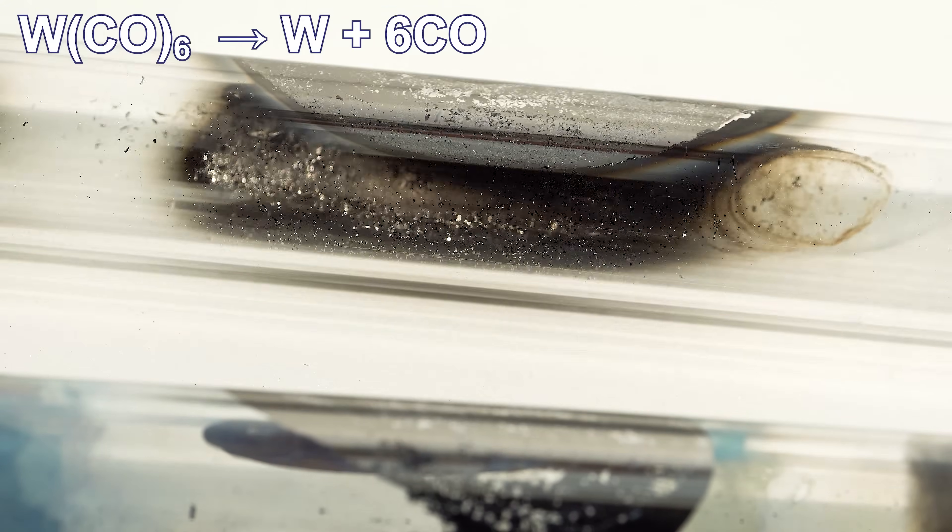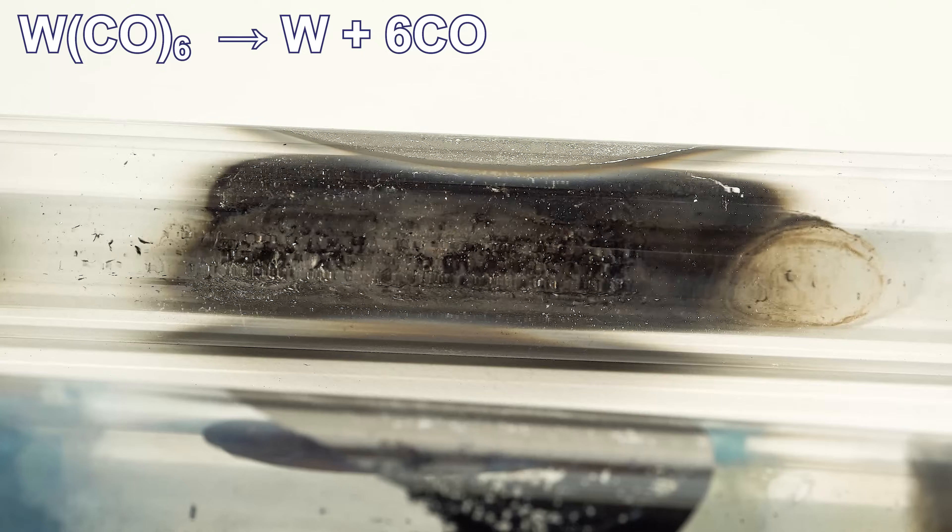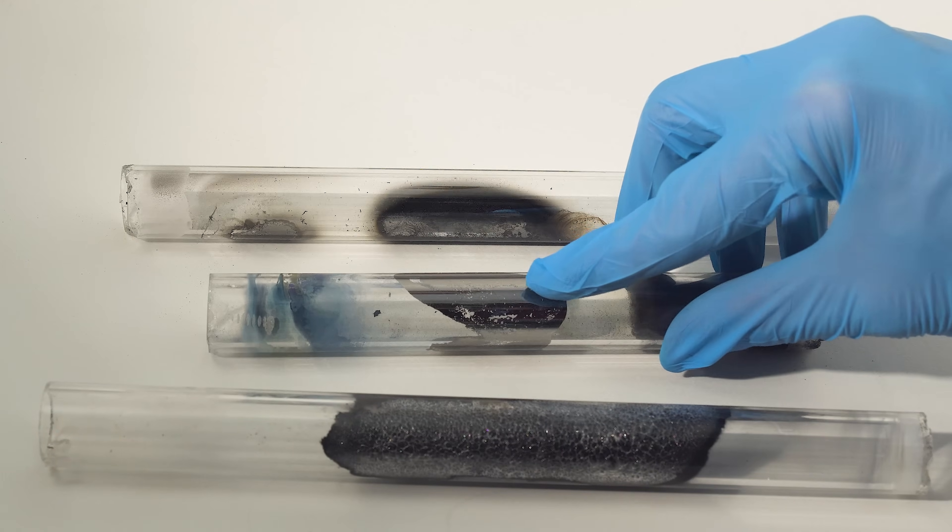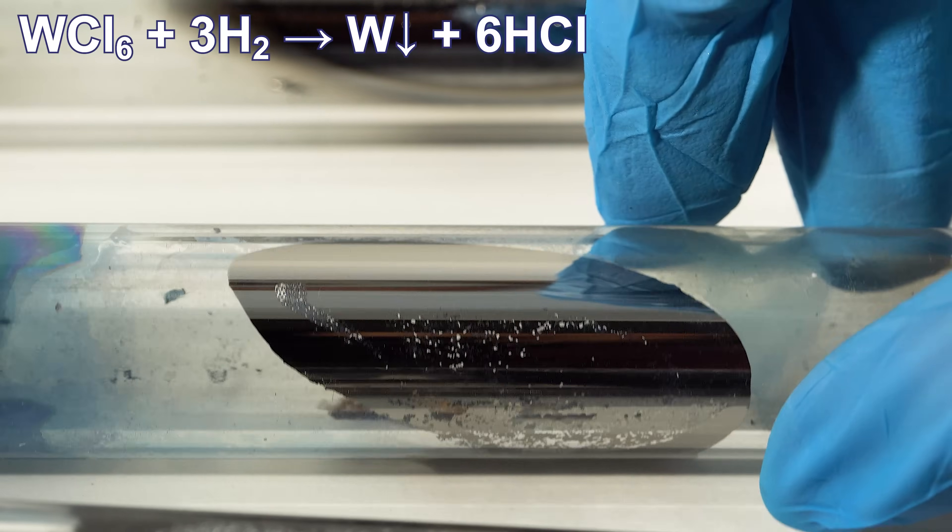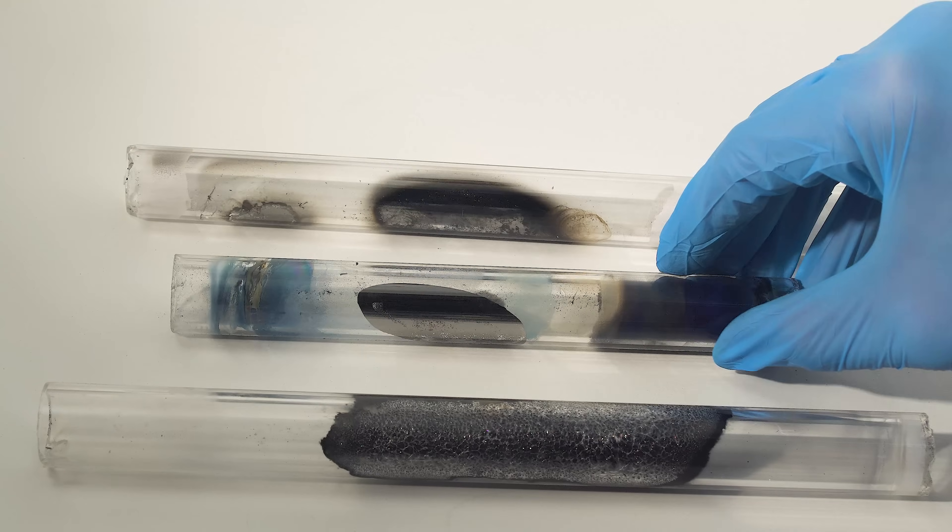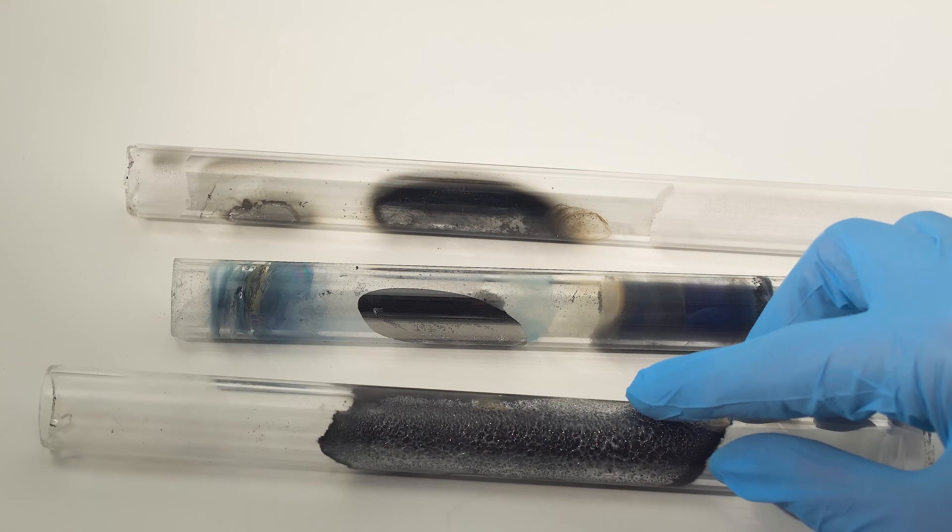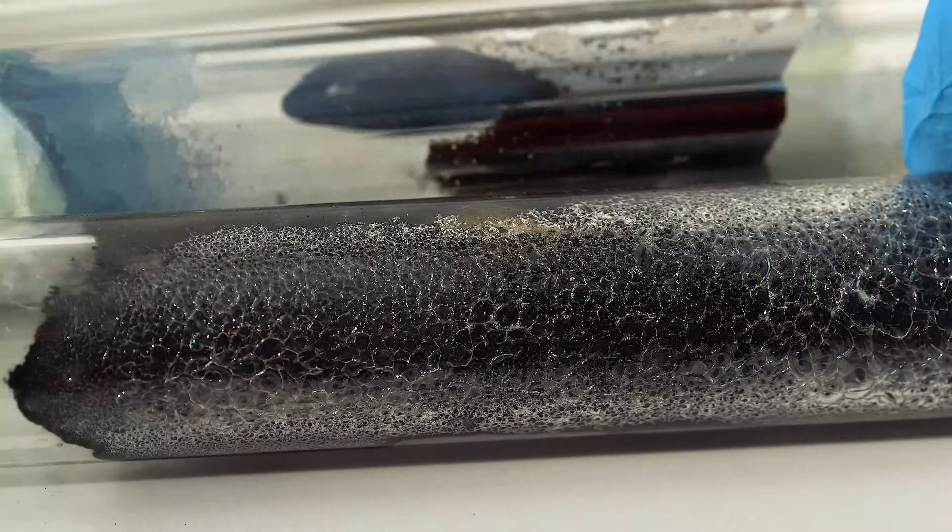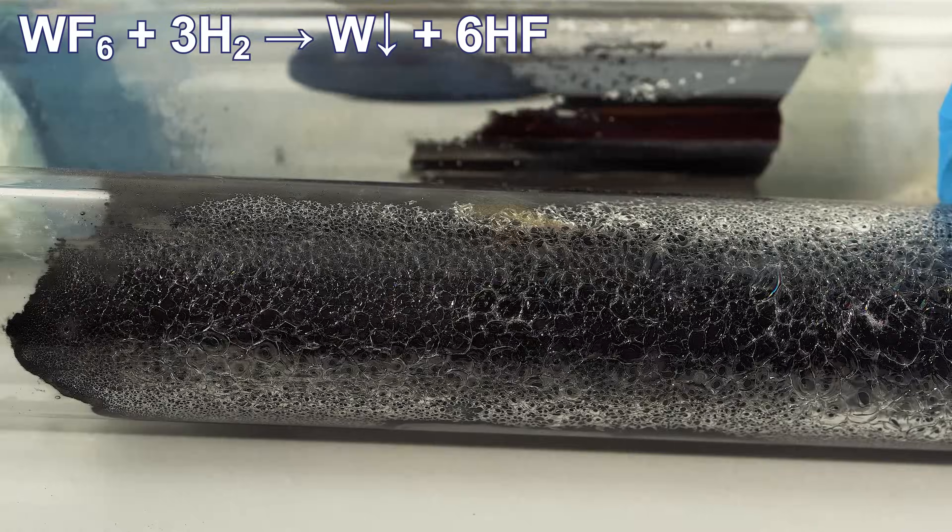I obtained this mirror by decomposition of tungsten hexacarbonyl in an inert gas atmosphere. This tungsten mirror was obtained by reacting vapors of tungsten hexachloride with hydrogen. And this tungsten coating was obtained by reacting tungsten hexafluoride with hydrogen.